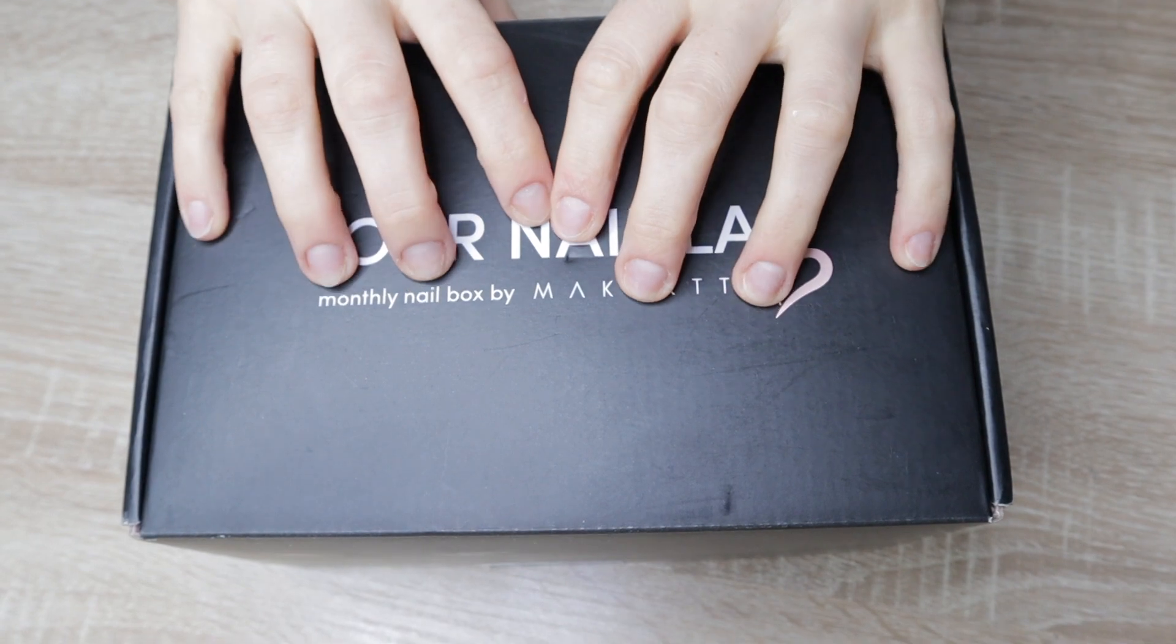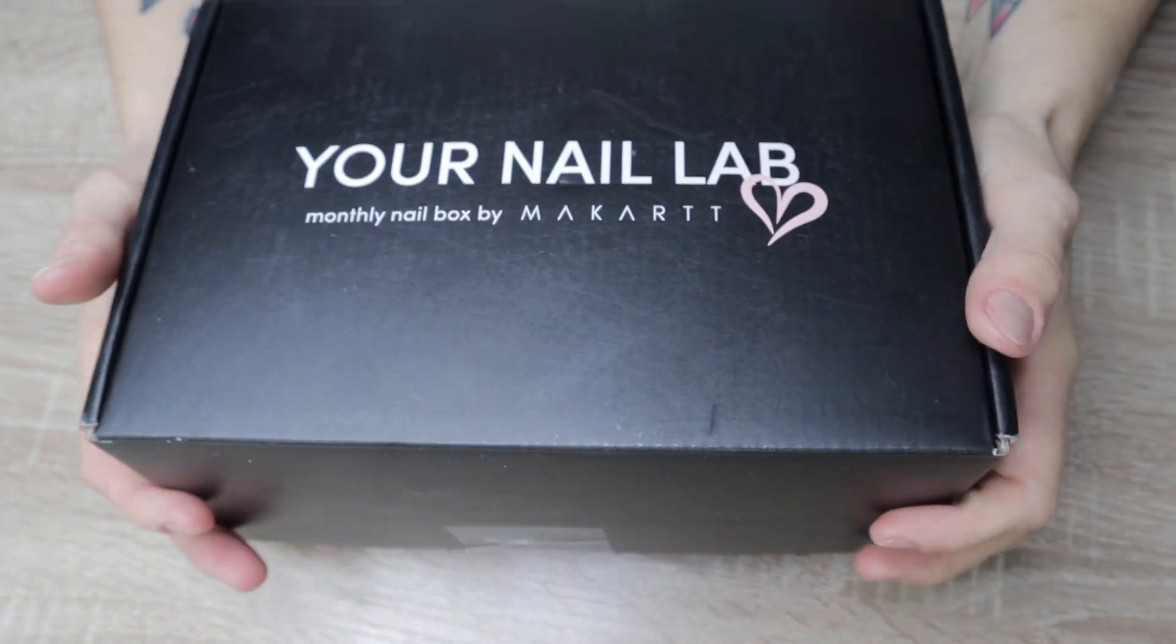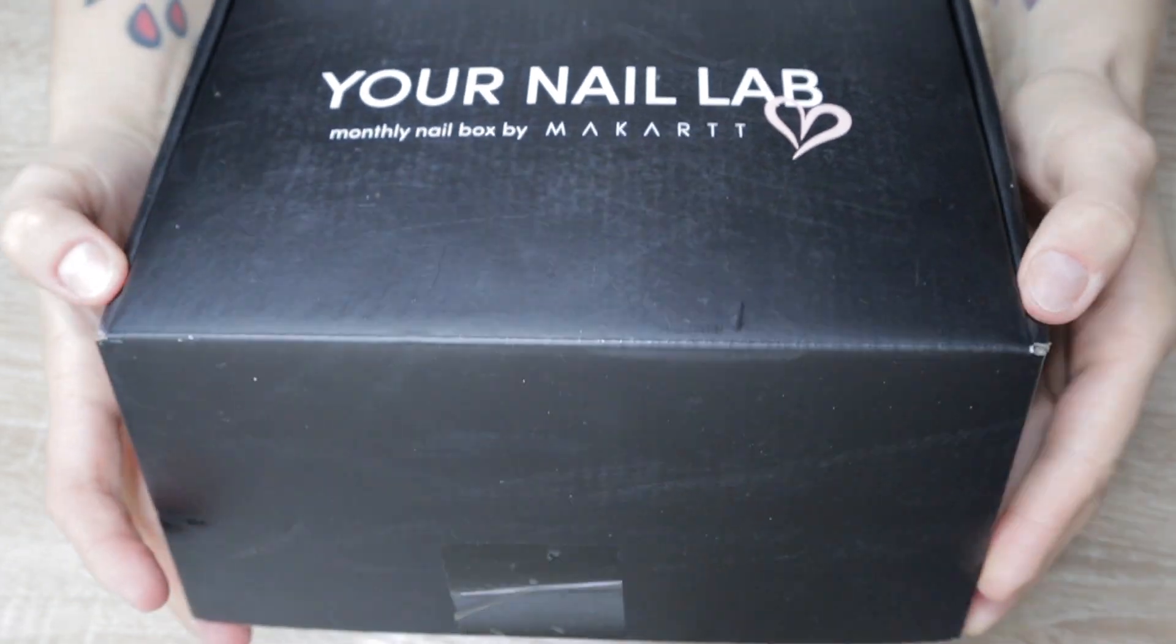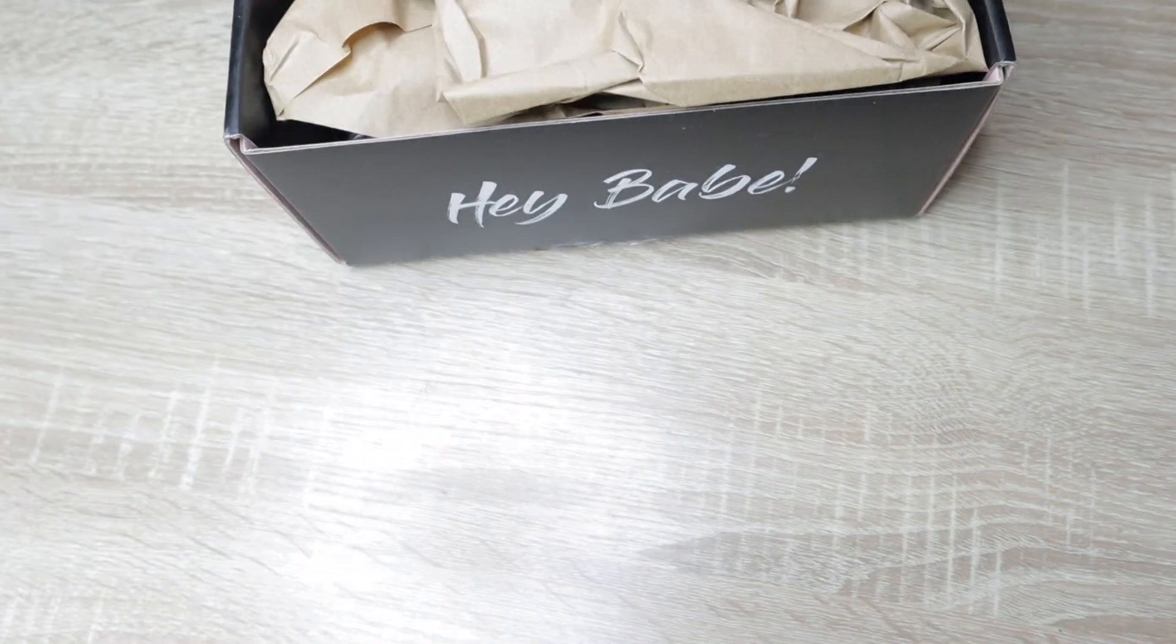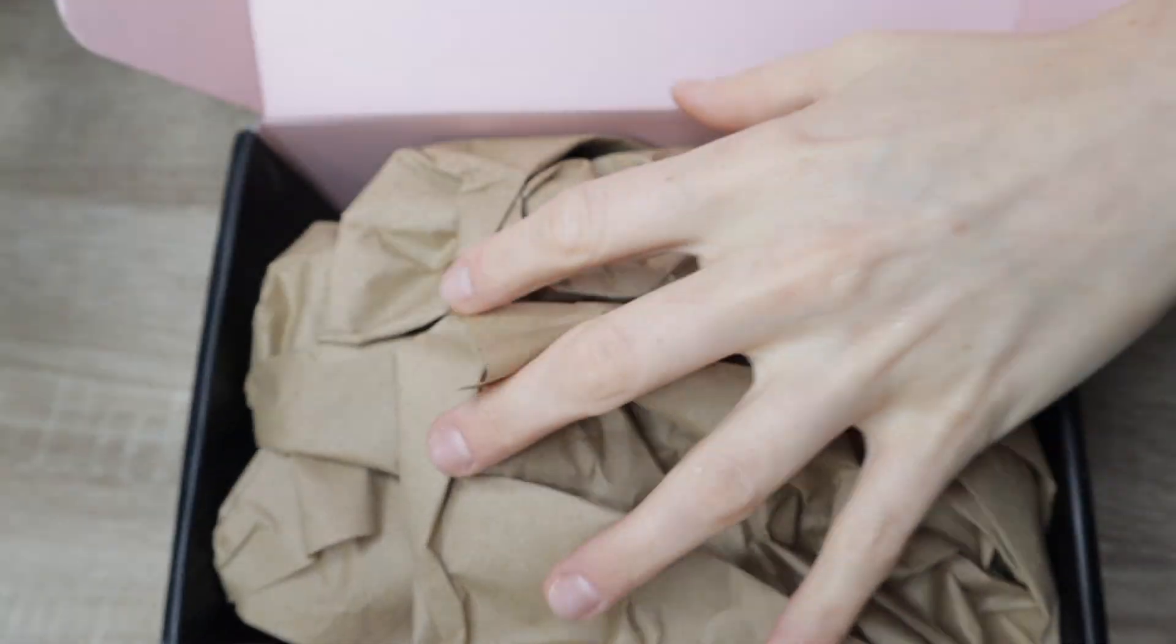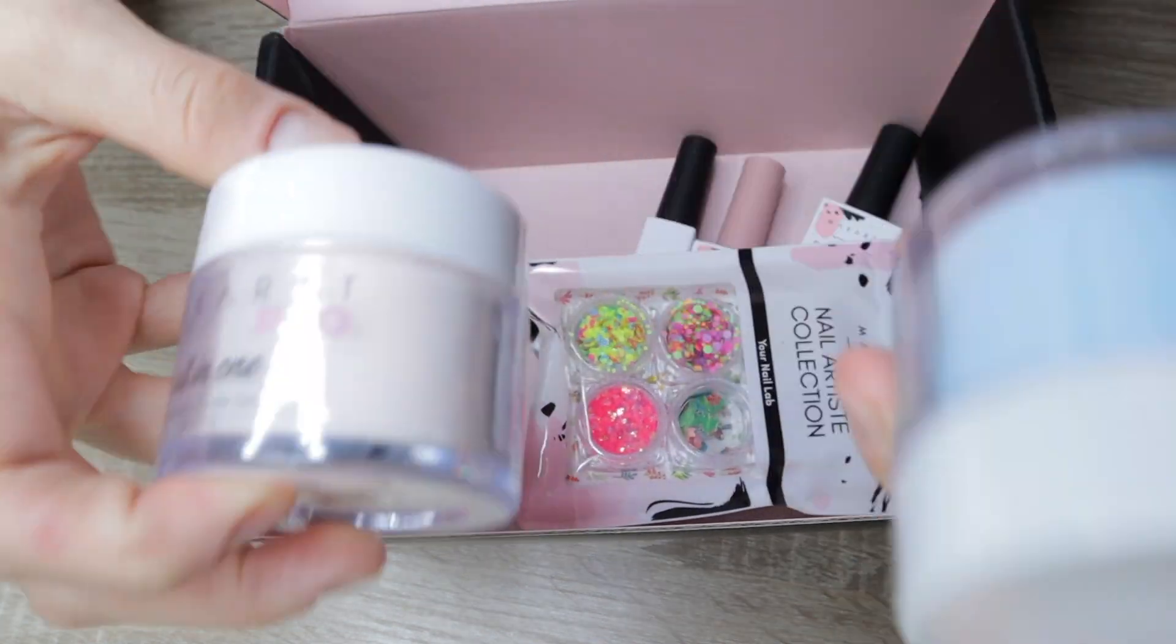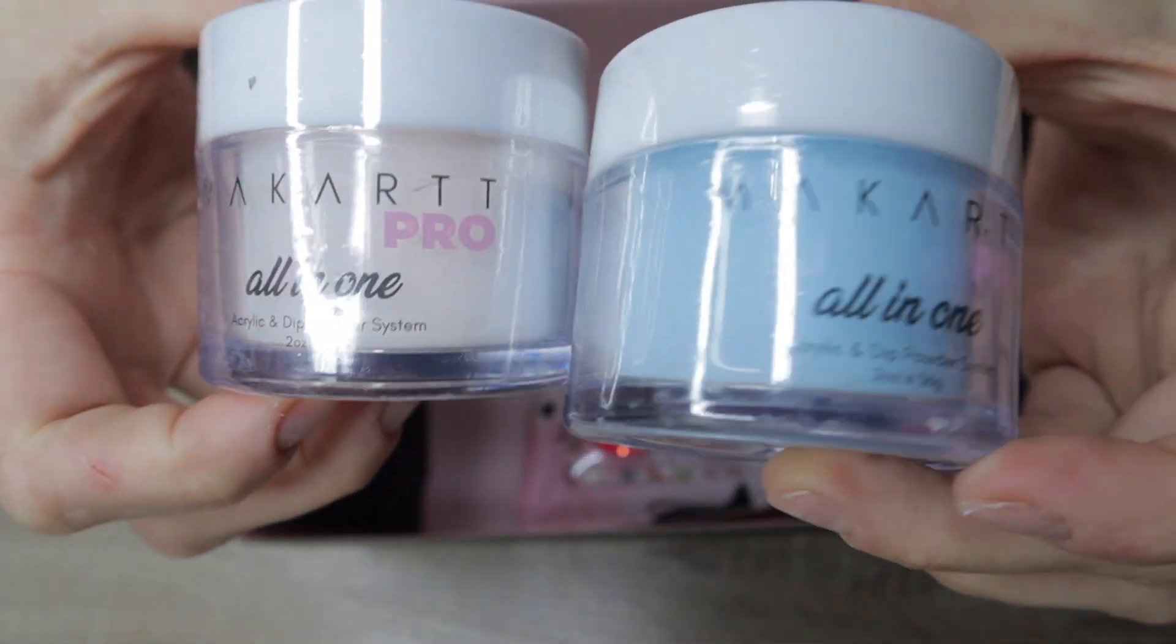Welcome back nail queens! Today I am unboxing the monthly mystery box by McCourt. It is their Nail Lab monthly nail box and it has a bunch of different products. It can range from acrylic charms, nail art, dip powder, and gel. There's a lot of stuff that comes in these, so here I am unboxing the August box.